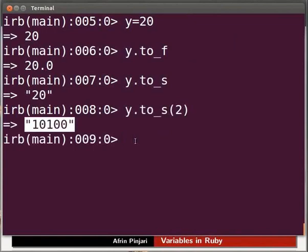We get the output in the binary form. Similarly, you can convert variable y to octal or hexadecimal form by changing the number base to 8 or 16. Let us switch back to our slide.